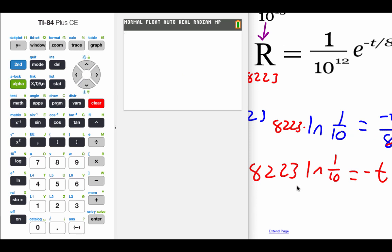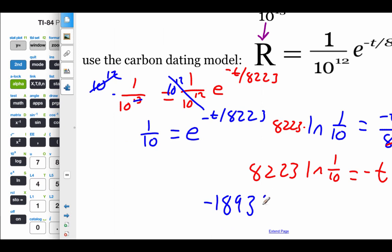I'm going to type this left-hand side into my calculator to get a decimal approximation. So 8,223 times the natural log of 1 divided by 10. Hit enter. We get negative 18,934 equals our negative t.